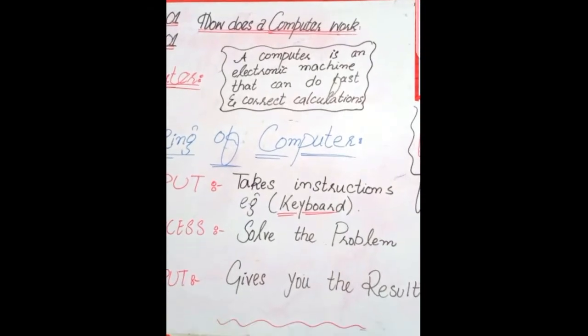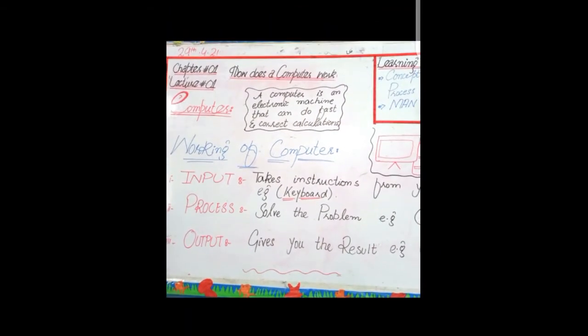We have to know that computer is an electronic machine that can do fast and correct calculations. Computer is an electronic machine - electronic machine means a device, a kind of machine which can be used by electricity, which can do fast, easy, and accurate calculations. That means your calculations are very accurate, there is no mistake. It can be fast. You can also say something about computer.